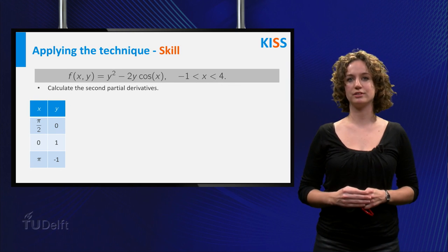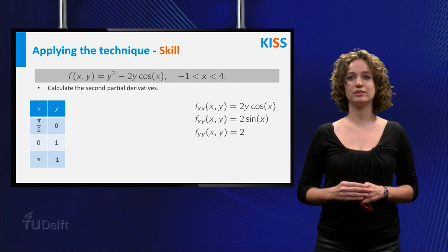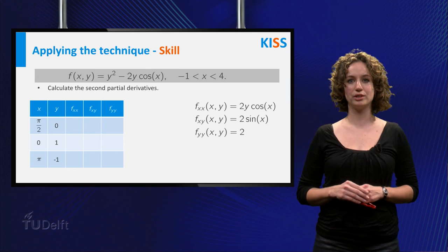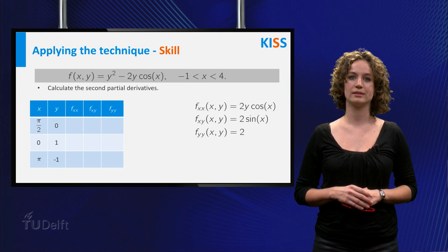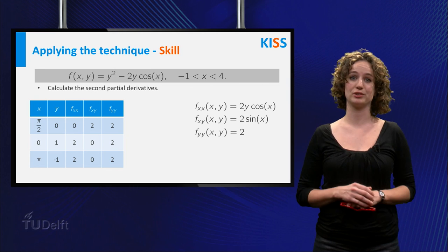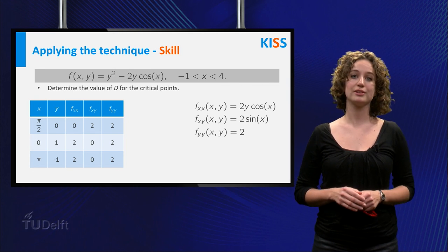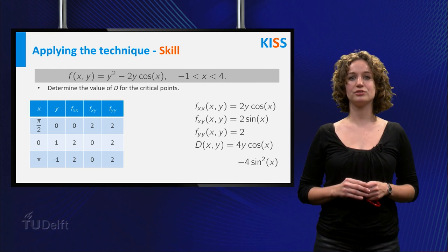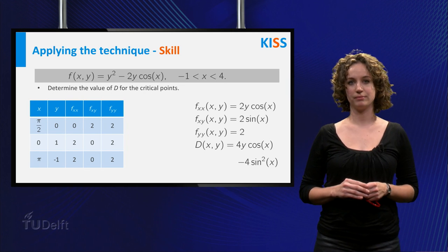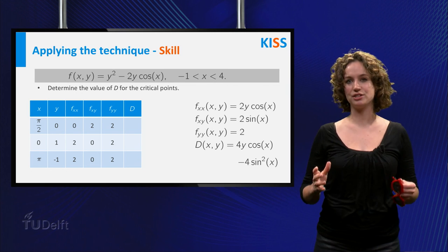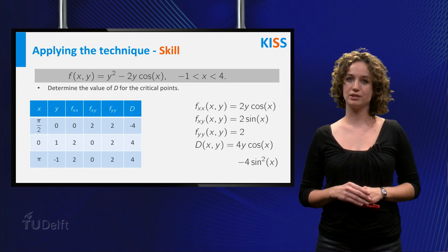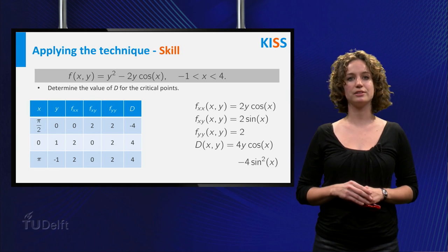Now calculate the second partial derivatives of f. The second partial derivatives are shown here. Next, calculate these second partial derivatives at each of the critical points found in the previous step. The determinant D for your function is given by 4 times y times cosine of x minus 4 times sine squared of x. Calculating the determinant at each critical point: for (pi/2, 0) the determinant becomes minus 4; for (0, 1) and (pi, -1) the determinant is equal to 4.